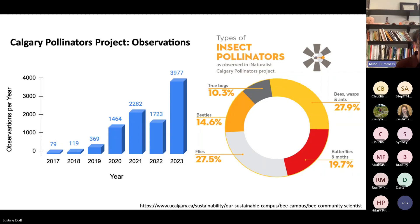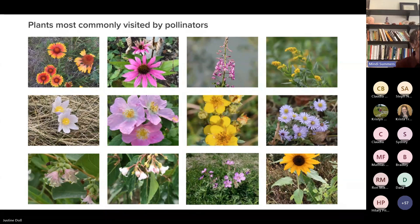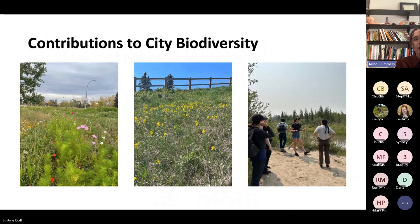Within the project, most commonly people were taking pictures of bees, ants and wasps, or flies. We have a lot of butterflies as well, and some beetles and true bugs. Looking at our most commonly observed pollinator species, we have butterflies like clouded sulphur, flies like drone fly, and quite a few bumblebee species including cryptic bumblebee, hunts bumblebee, and Nevada bumblebee. We also have quite a few skippers and the cabbage white butterfly. Looking at plants in the project, we have quite a few native plants: blanket flower, purple coneflower, fireweed, goldenrod, prairie crocus, wild rose, shrubby cinquefoil, asters, and snowberry. These will hopefully be updated soon with new data from last year.